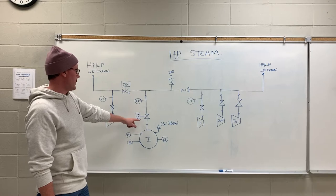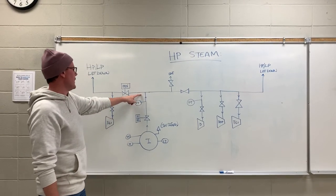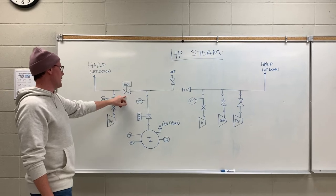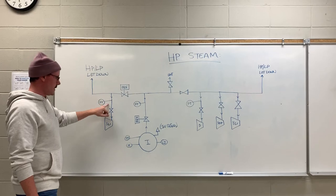It leaves, goes through a non-return valve, goes past a flow transmitter back to the header. It heads this way, it goes to a motor-operated valve before going down into TG1 where there is a flow transmitter.